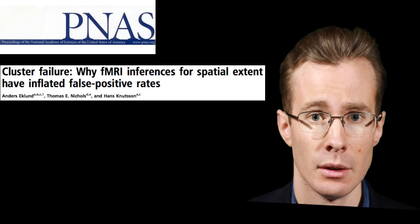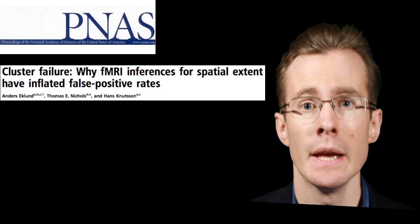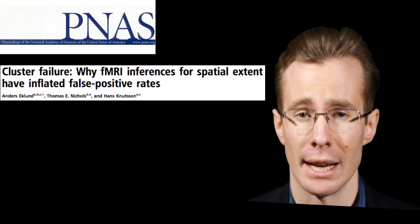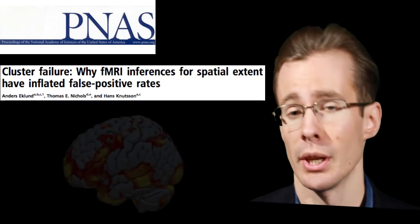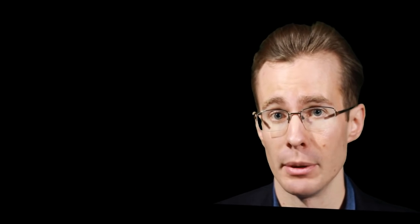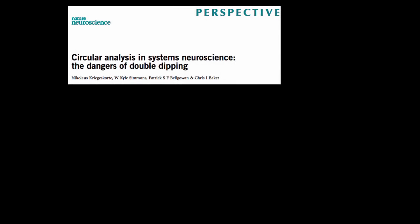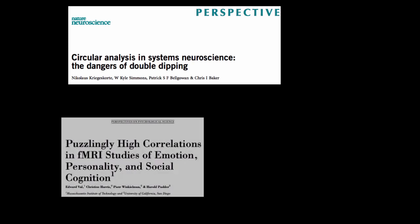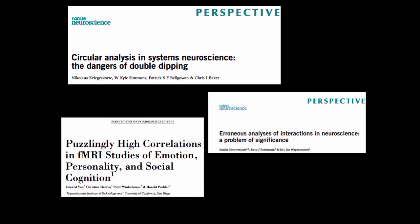The question was whether cluster correction, a commonly used method in neural imaging, is responsible for inflated false positive rates — saying that a result exists when it actually isn't there. Similar to what happens when you think that your cell phone buzzed, but actually you're just going insane. There have been issues with neural imaging methods before, such as circular or biased analyses, as well as erroneous interpretations of interactions and other statistics.